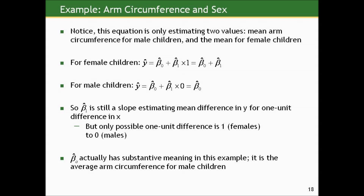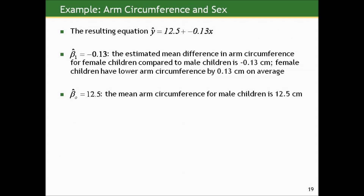The only difference between those two estimates is the slope beta-one-hat, which still estimates a mean difference in Y for a one-unit difference in X. Because X only has two values, the only possible one-unit difference is one to zero. Interestingly, the intercept here has substantive meaning: it is the average arm circumference for male children — not just a placeholder, but a useful value in interpretation.